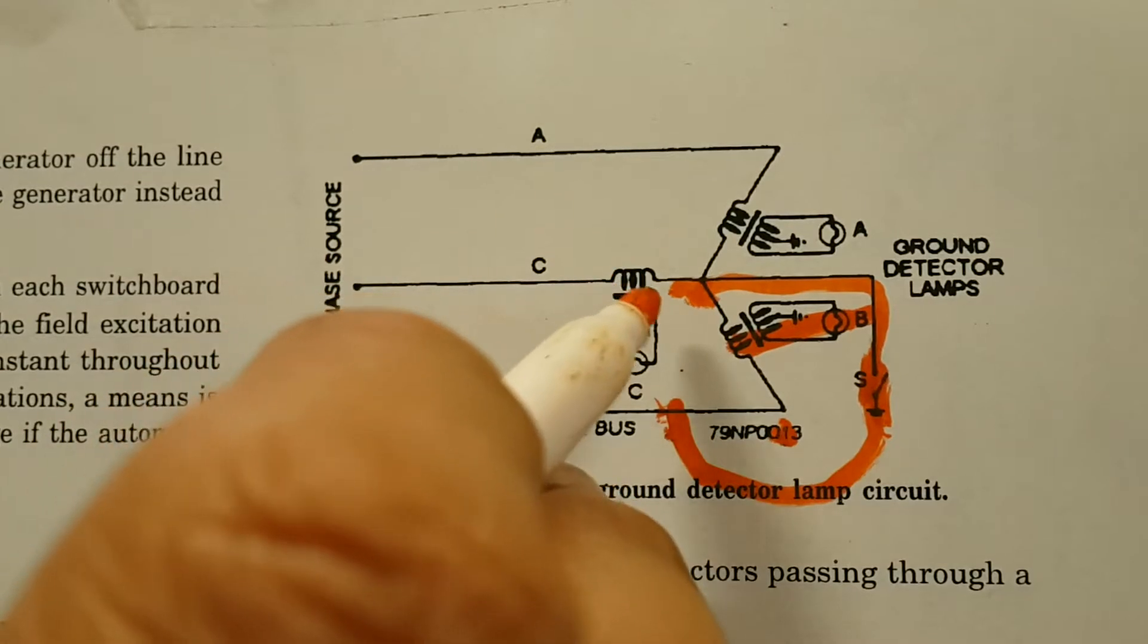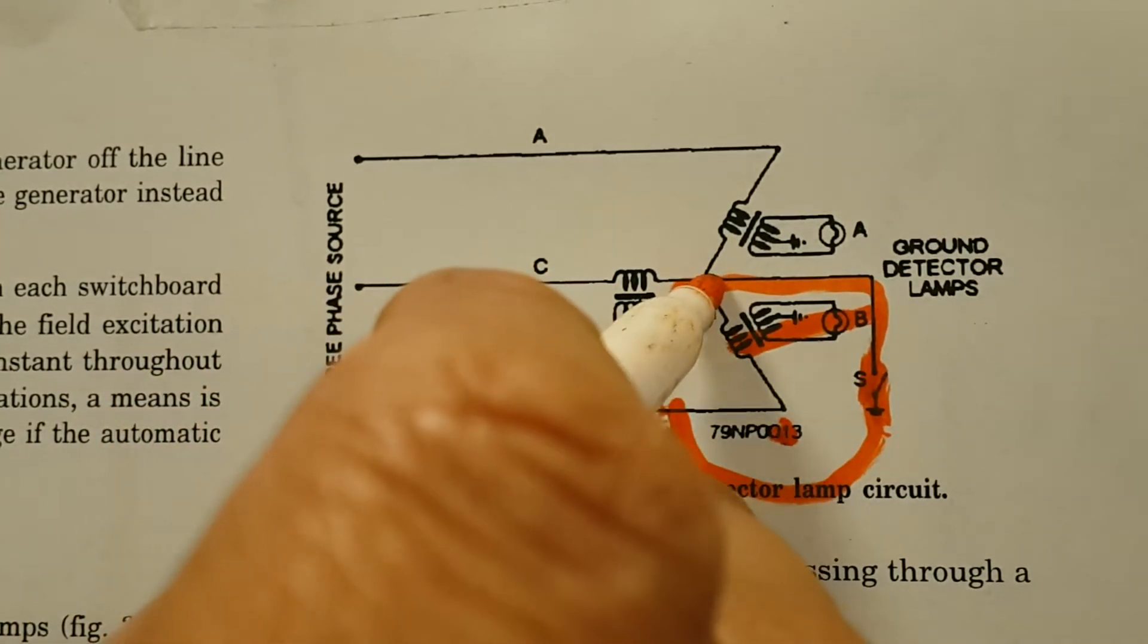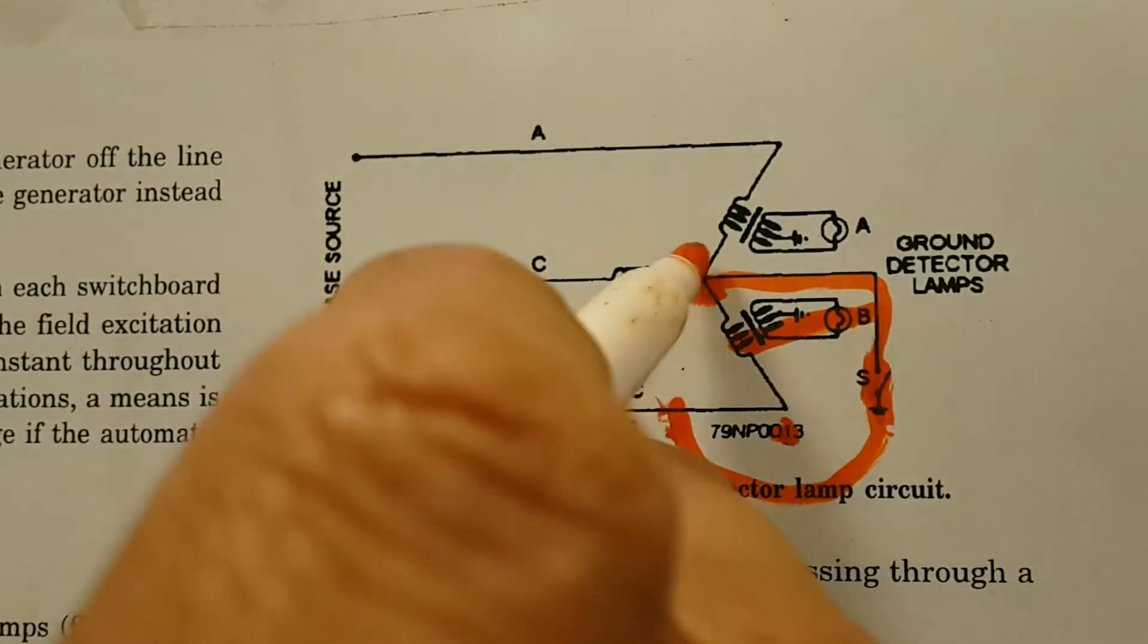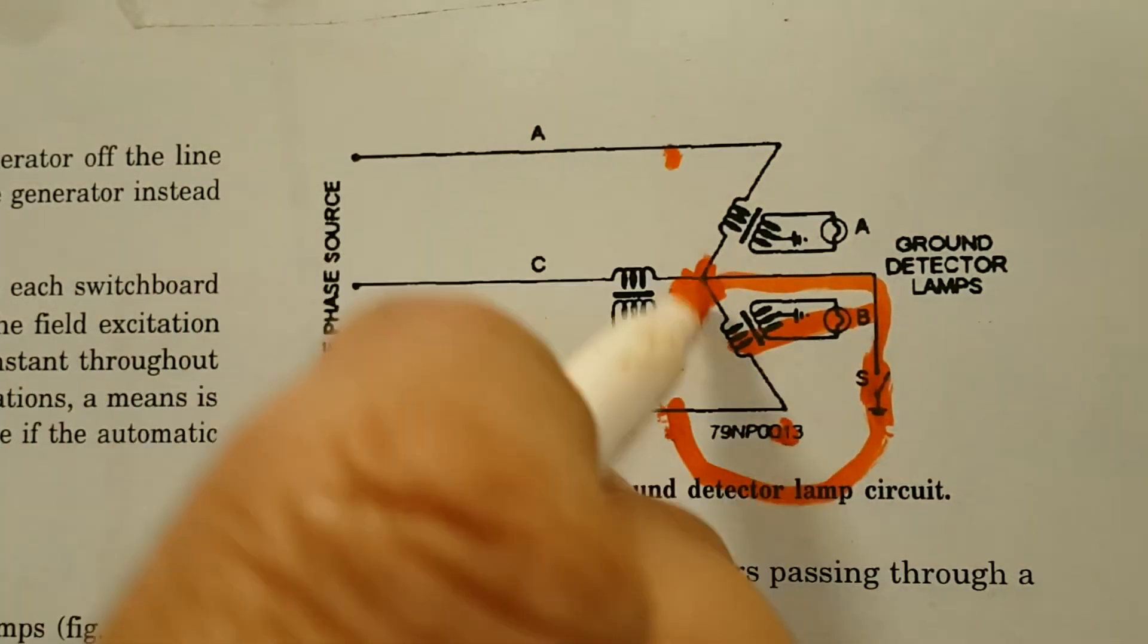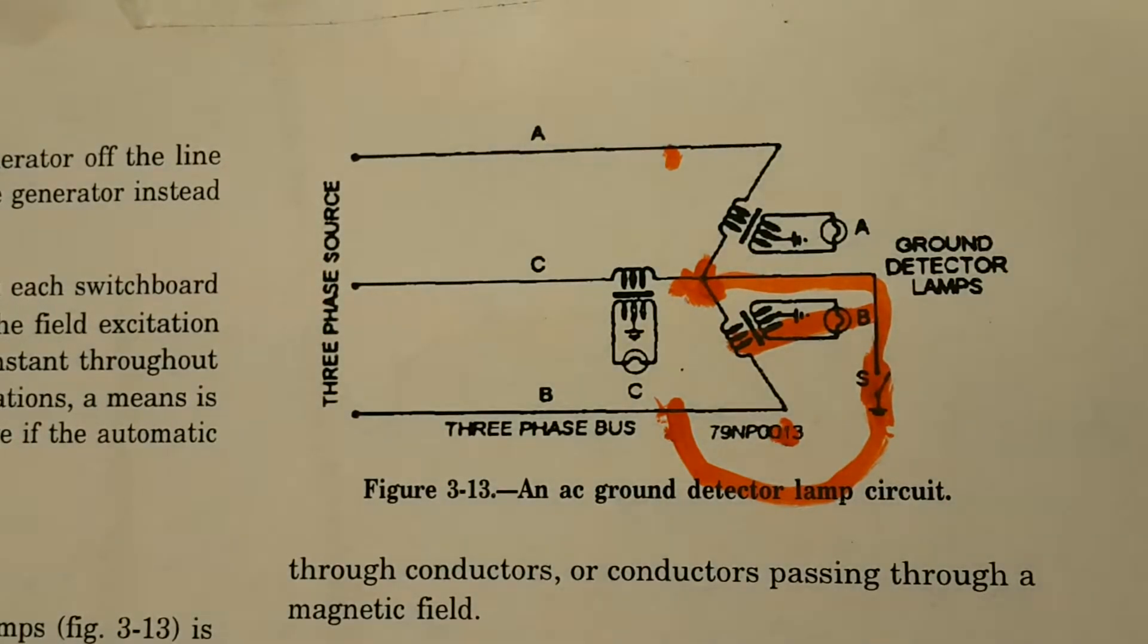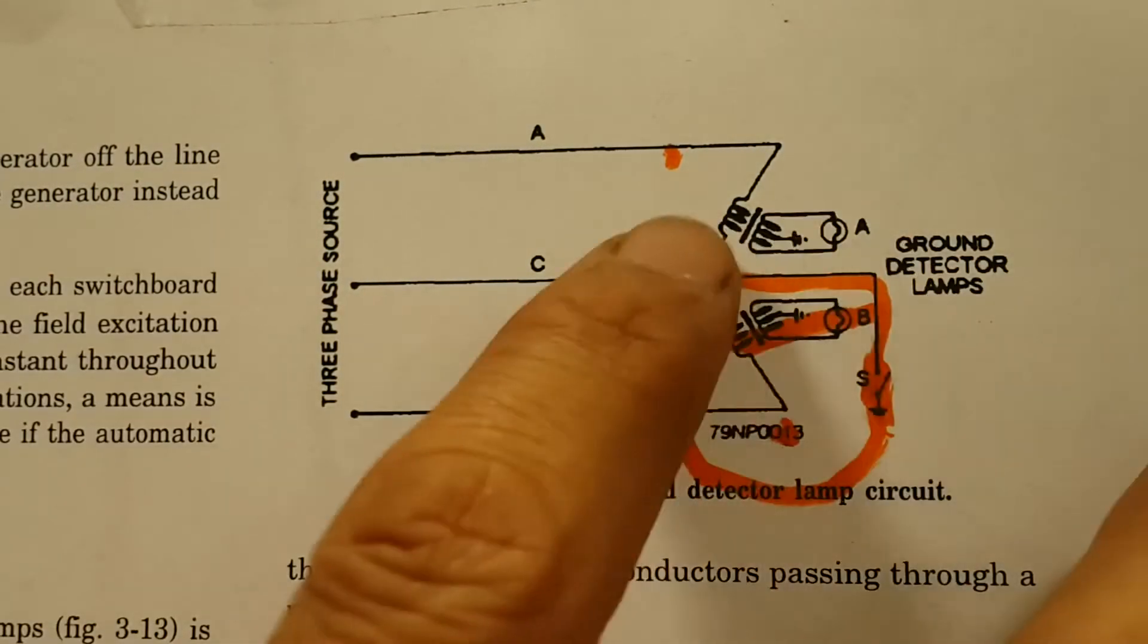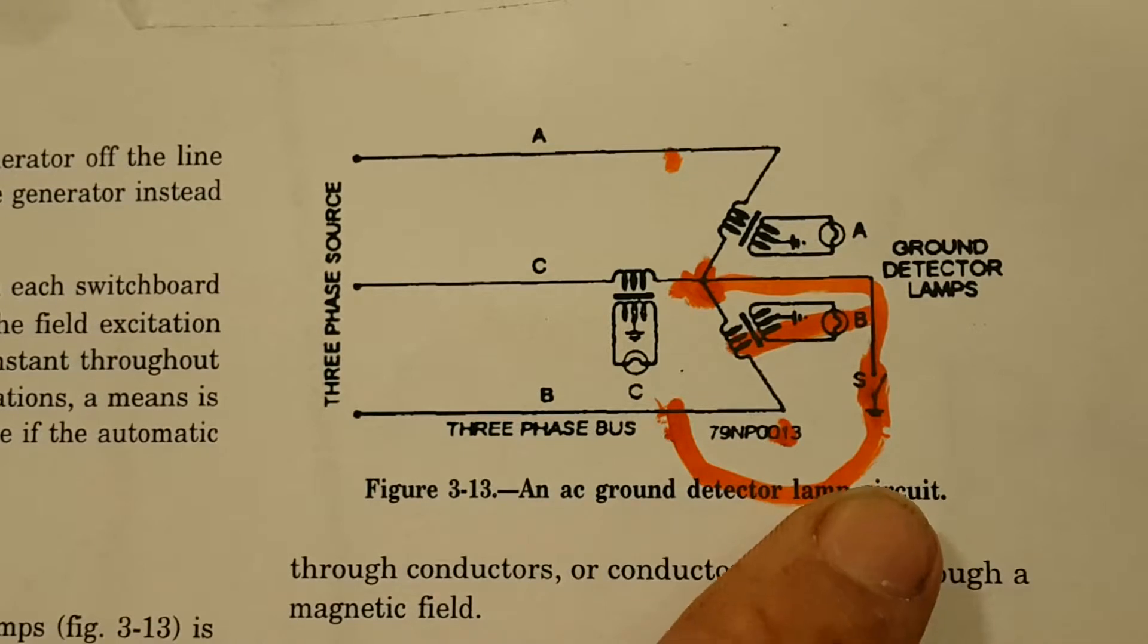The other two lights will become brighter because now we got C potential here, so now the difference of potential between this point and this point would be 440 volts.